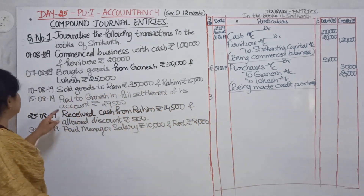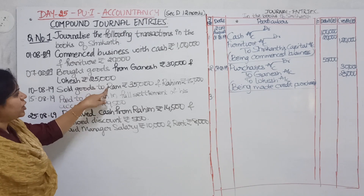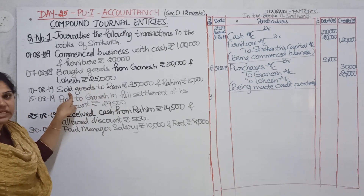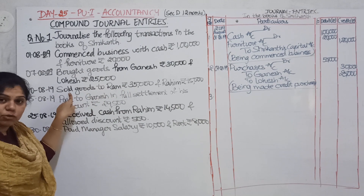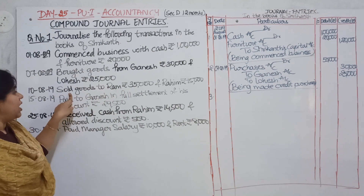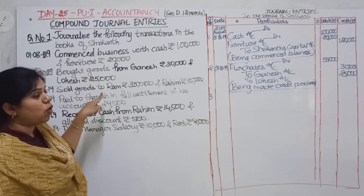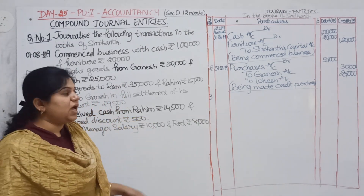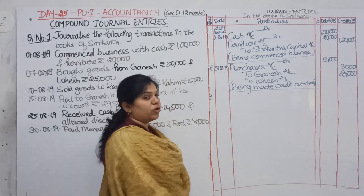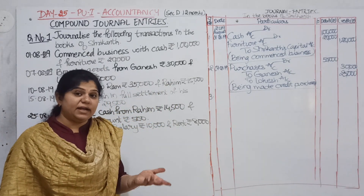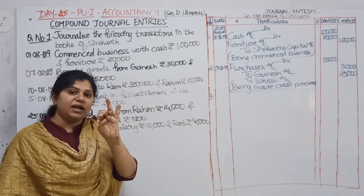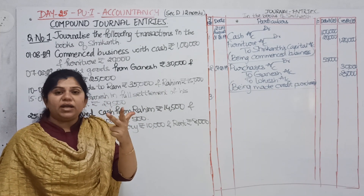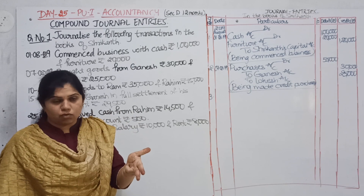Entry number 3: sold goods to Ram and Rahim. Again, please understand — the nature of the transaction is the same. Nowhere is cash mentioned, so obviously it is a credit transaction. The accounts involved are: sales, Ram and Rahim. Sales is a real account; Ram and Rahim are both personal accounts.